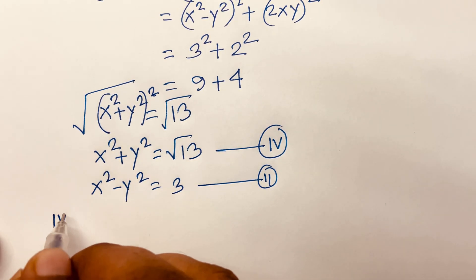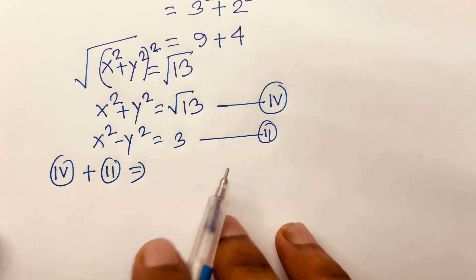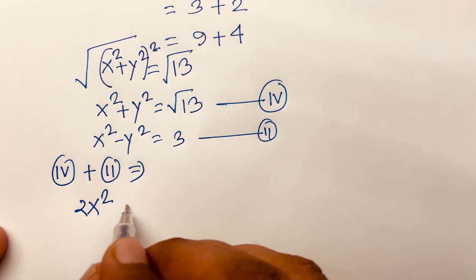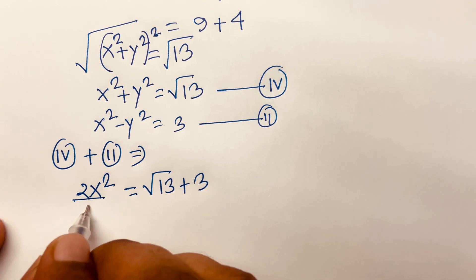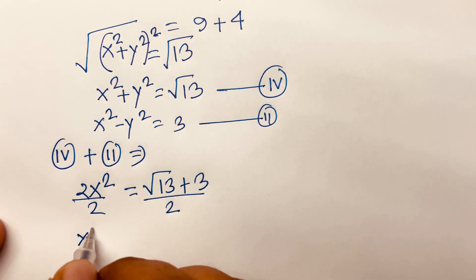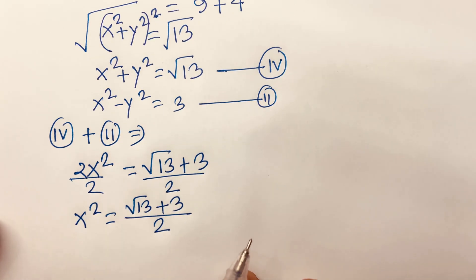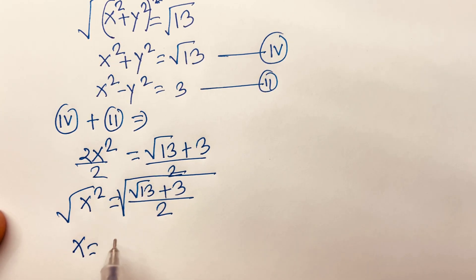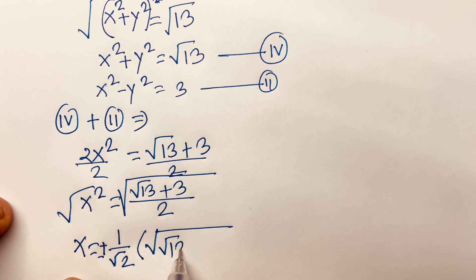Adding equation 4 and equation 2: x² plus x² gives 2x², and y² minus y² cancels to 0, leaving 2x² equals √13 plus 3. Dividing both sides by 2, x² equals (√13 plus 3) over 2. Taking the square root, x equals plus or minus (1 over √2) times √(√13 plus 3).